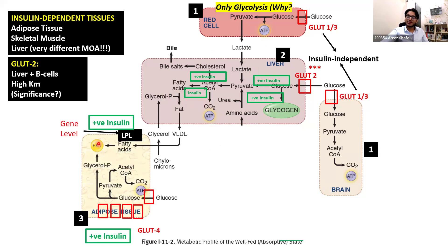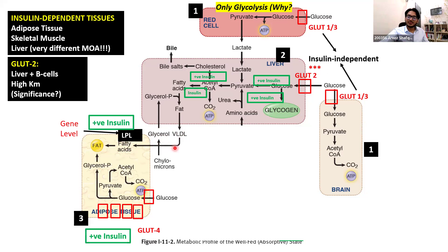So now insulin is telling the liver what to do with the glucose. At the same time, insulin is going to the adipose tissue and telling it: I've told the liver to produce fat and package them in VLDLs — they're going to get ApoC2 — so I want you to start expressing lipoprotein lipase. So as VLDLs and chylomicrons are in the circulation, LPL is upregulated by insulin. This starts extracting the fatty acids — LPL breaks down triglycerides into glycerol and fatty acids. The fatty acids are taken up by the adipocyte. The glycerol goes back to the liver to get joined again to fatty acids to produce more triglycerides, packaged into more VLDLs.